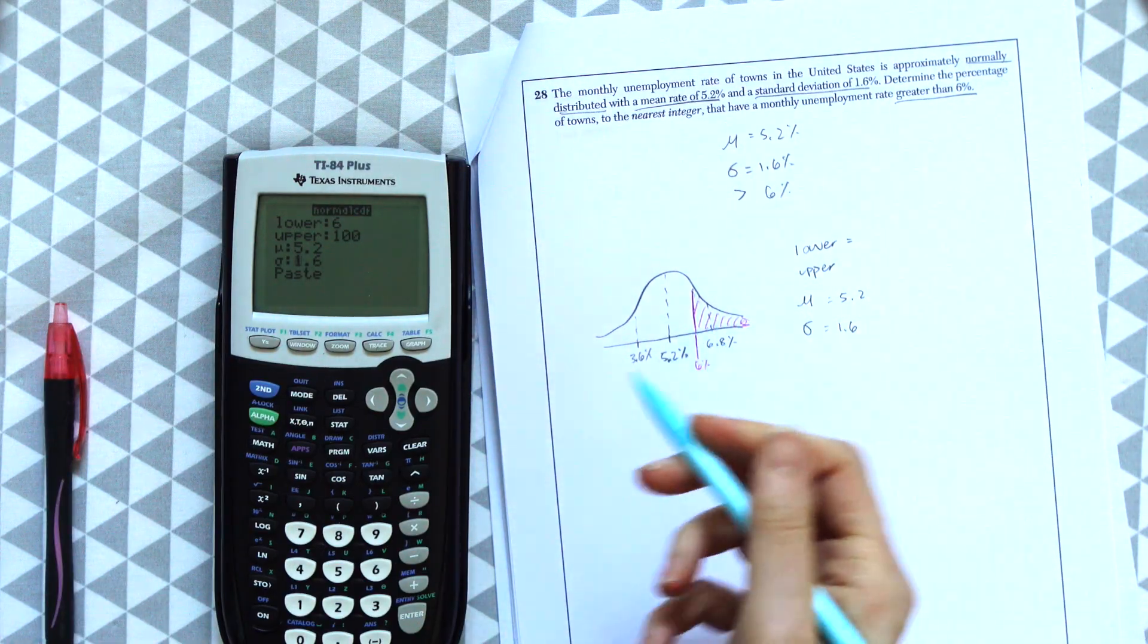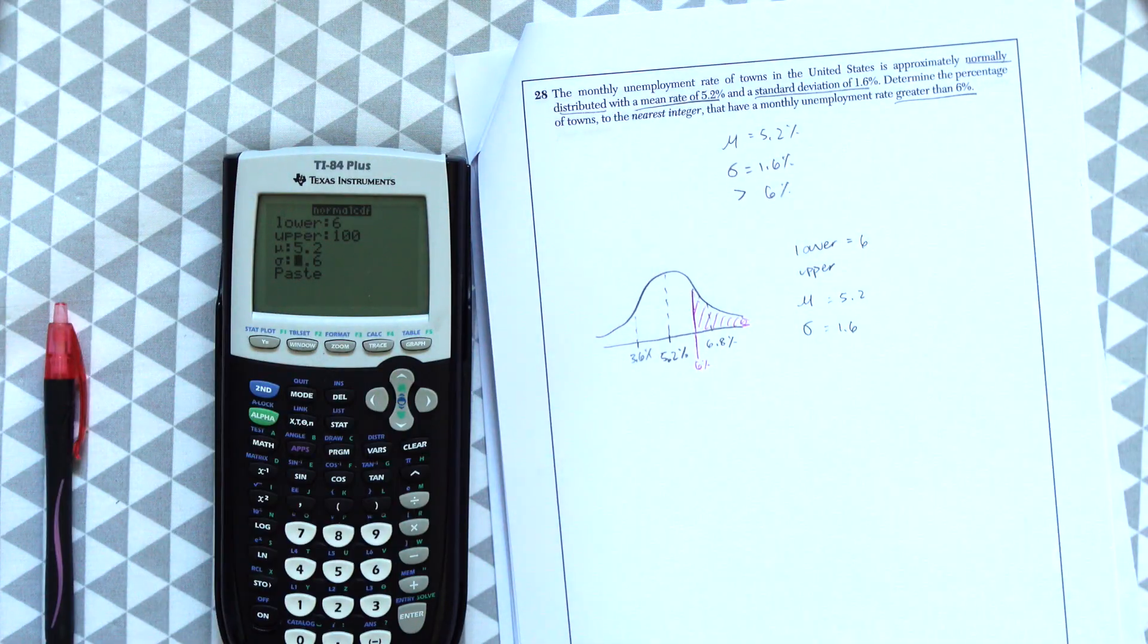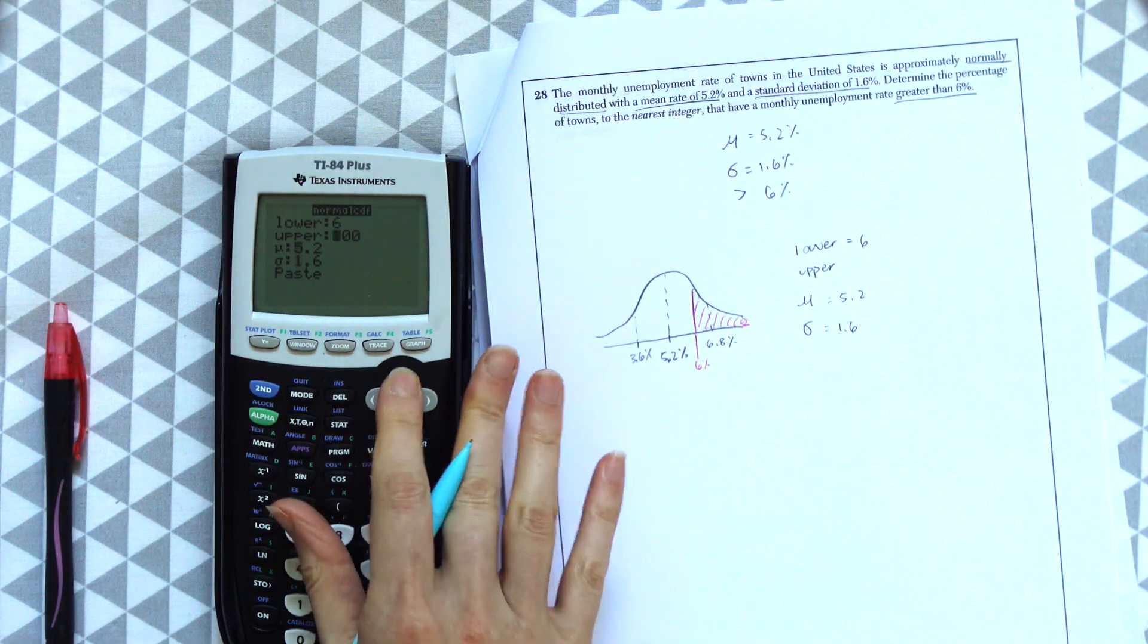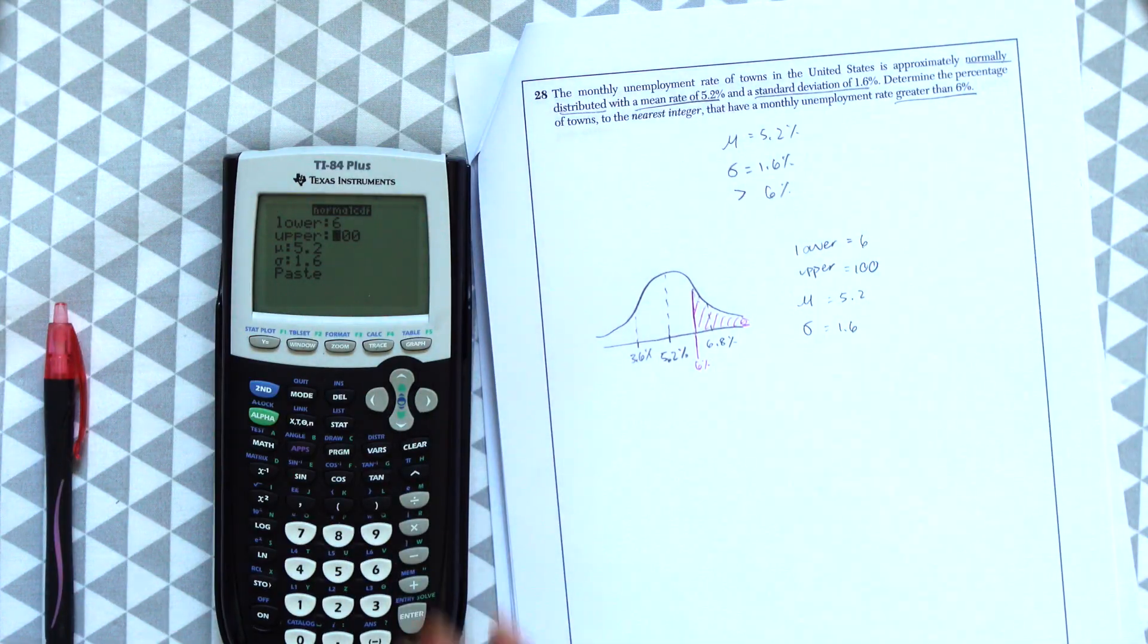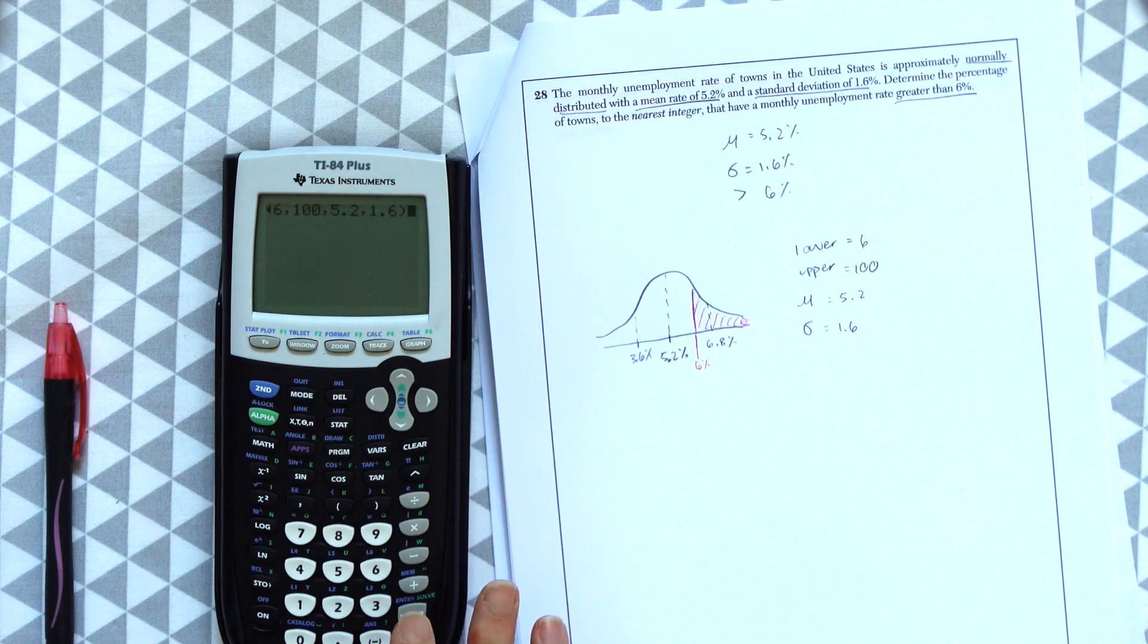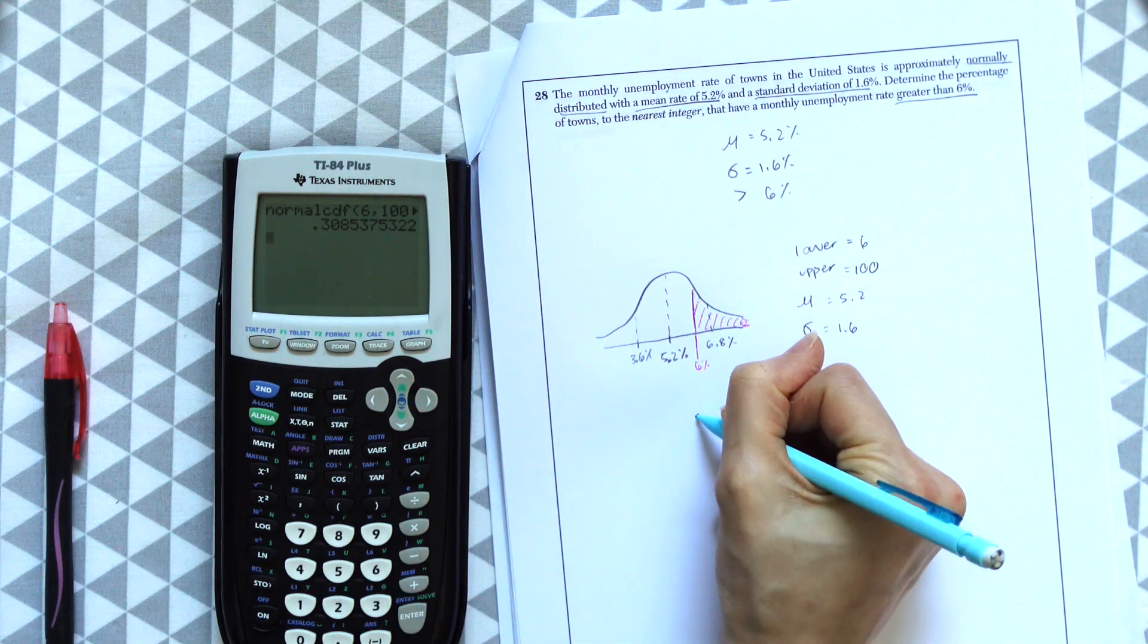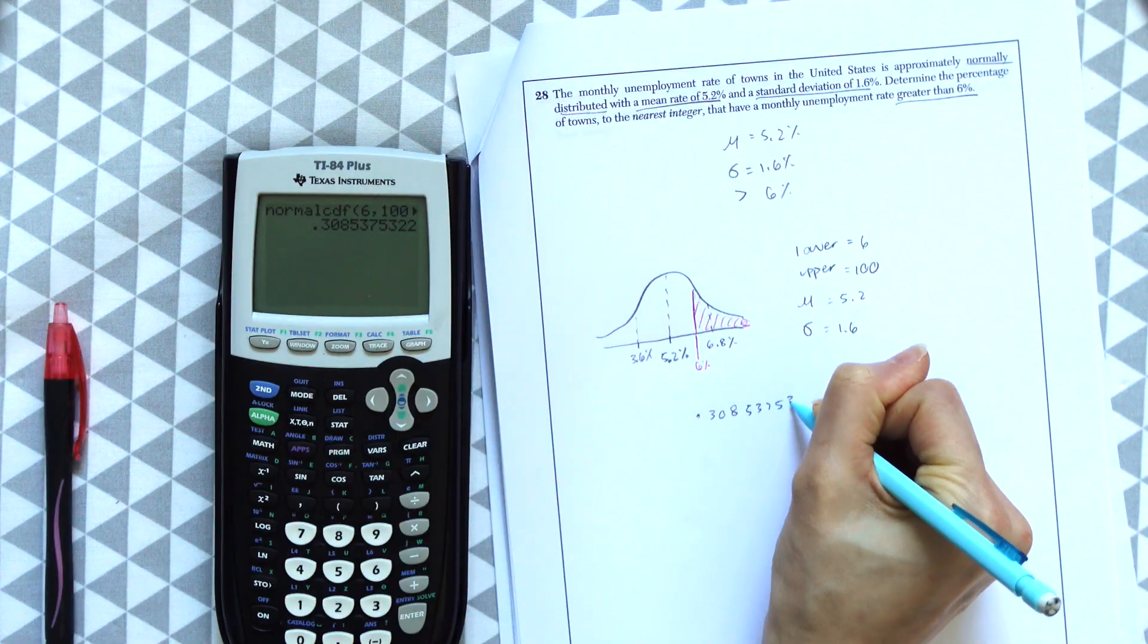And then for the lower, we know the lower bound of what we want is 6%. And since this is in percentage, we know that the upper bound can only go up to 100. So our upper bound is going to be 100. Okay, now we just press enter. And we get this value 0.3085375.